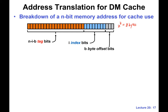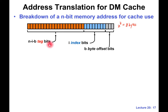We also have the blue bits, which are the index bits. We use these index bits to address or index the cache. And the remaining bits — the upper bits — are the tag. We use them as the tag.